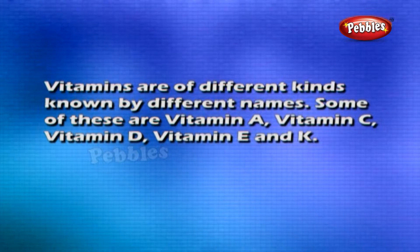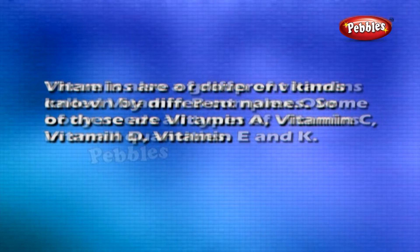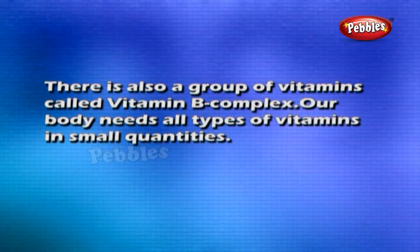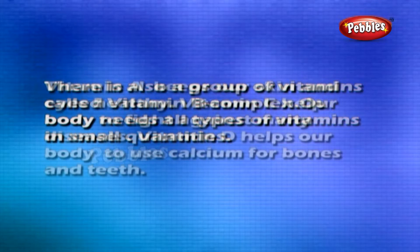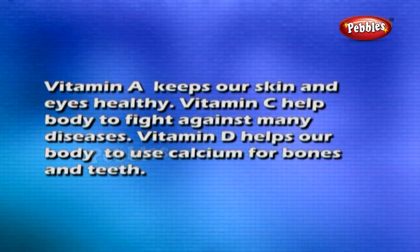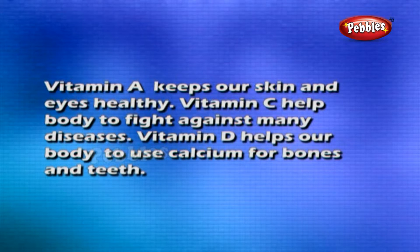Vitamins are of different kinds known by different names: vitamin A, vitamin C, vitamin D, vitamin E, and vitamin K. There is also a group called vitamin B complex. Our body needs all types of vitamins in small quantities. Vitamin A keeps our skin and eyes healthy. Vitamin C helps the body fight against many diseases. Vitamin D helps our body use calcium for bones and teeth.